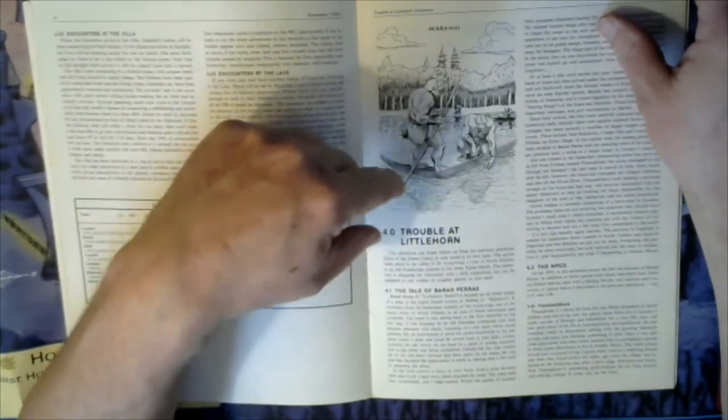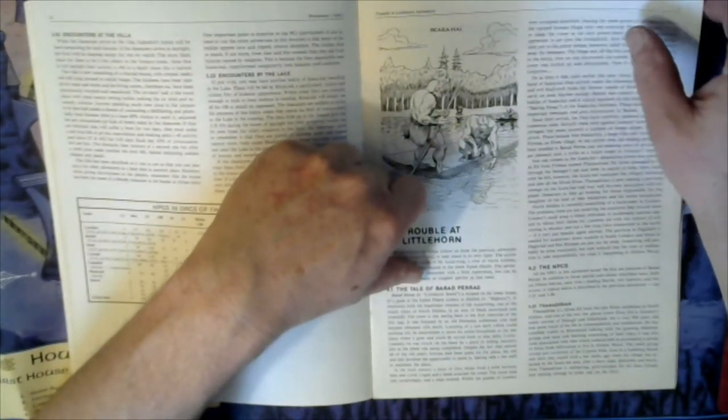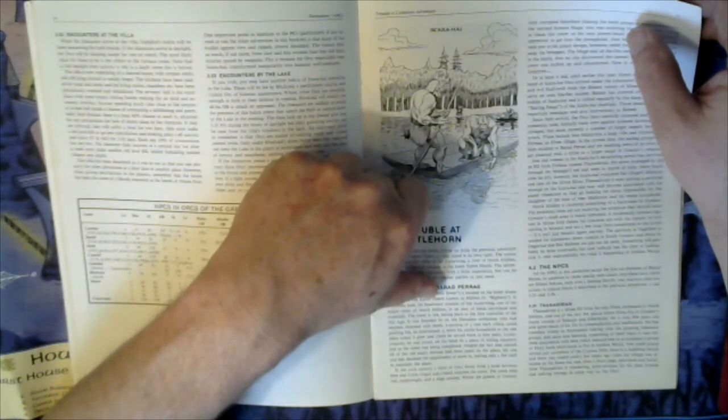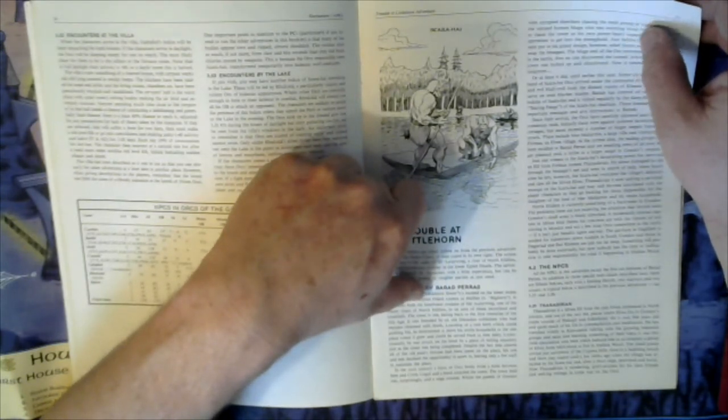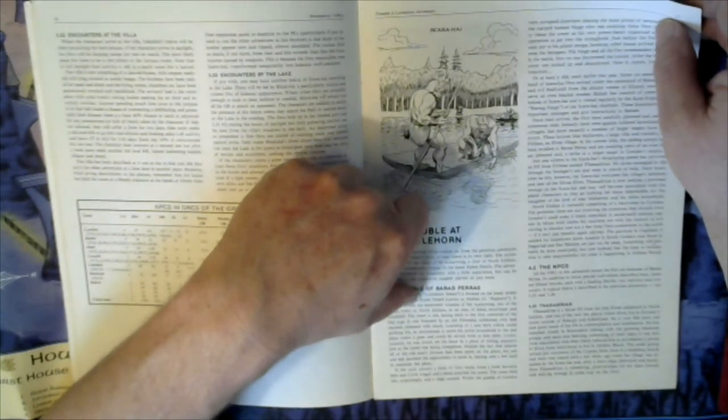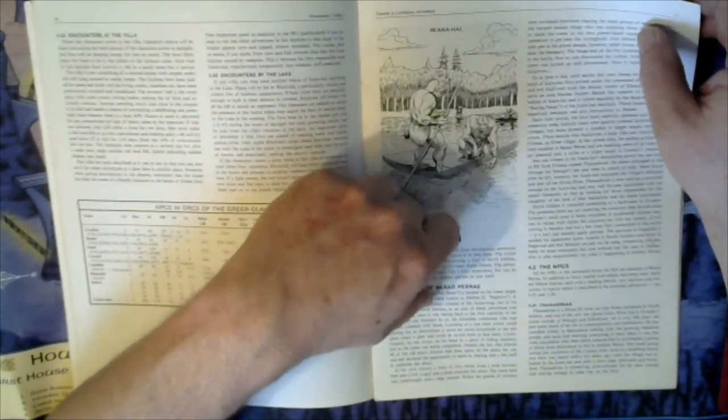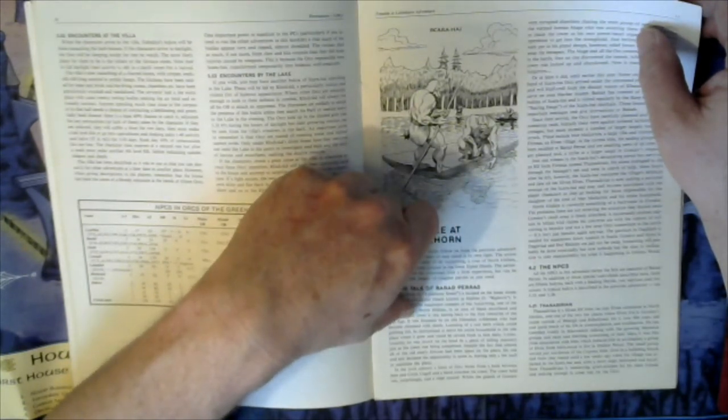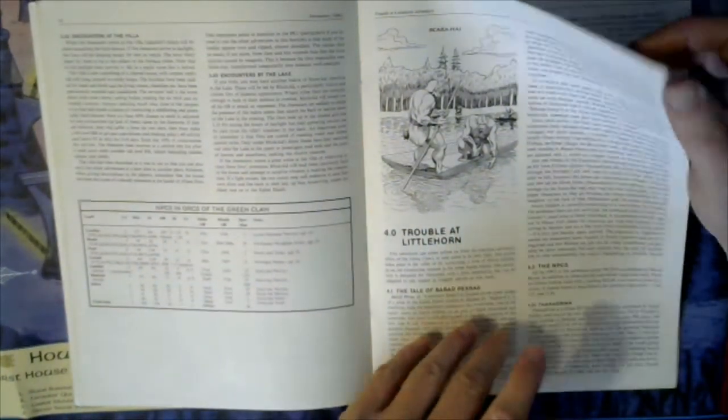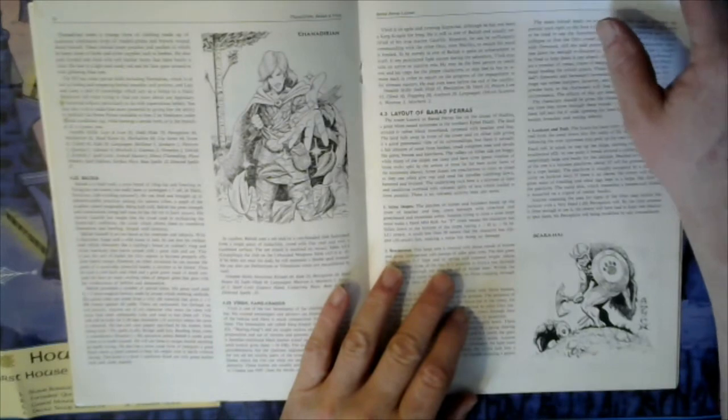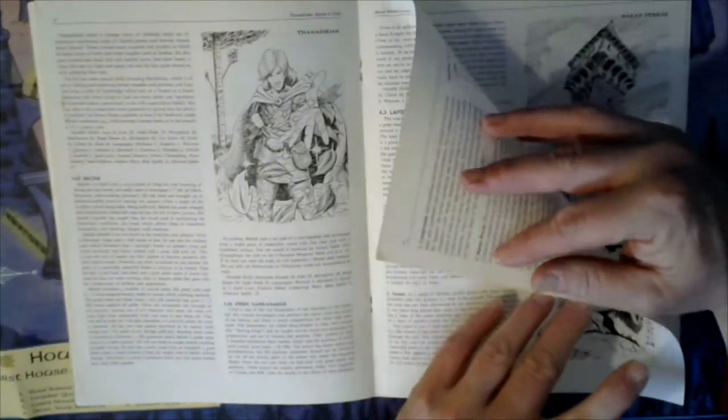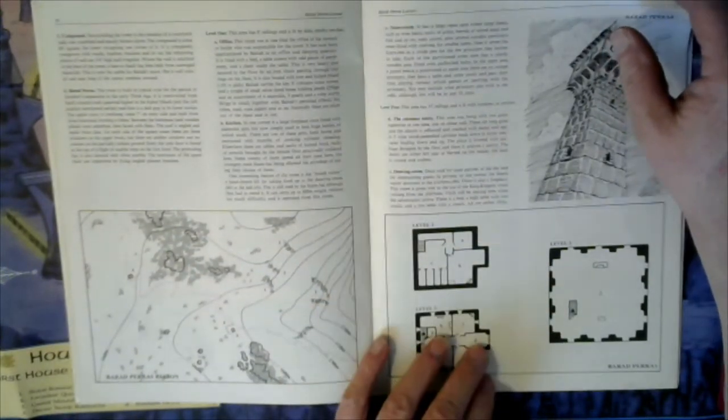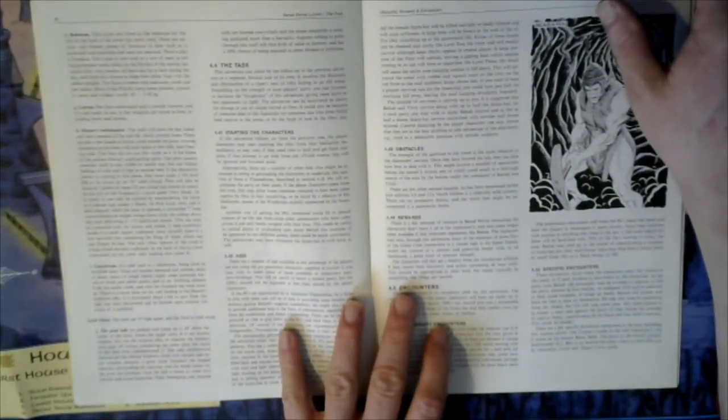Trouble at Littlehorn: the tale of Barad Paras. Littlehorn Tower is located on the lower slopes of the peak of the Ephel Duath known as the Hallars or Bighorn. It overlooks both the headwaters streams and Sir Ostraween, one of the major rivers of North Ithilian, and an area of bleak moorland and scree slopes. The tower is old, dating back to the first centuries of the Third Age, founded by a good Dunadan noble.